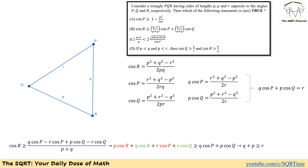Before tackling Case B, let's recall a useful identity. For triangle PQR: q·cos R + r·cos Q = p; similarly p·cos R + r·cos P = q; and q·cos P + p·cos Q = r. These projection formulas will be important for the analysis ahead.